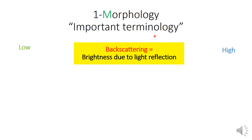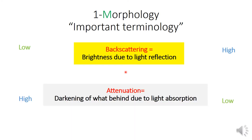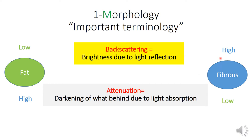We have important terms during description of the morphology of a lesion. The first is backscattering, which means brightness due to light reflection — either low backscattering (less bright) or high backscattering (very bright). The second term is attenuation: the darkening of what is behind, due to light absorption. High attenuation means we can't see what is behind because it absorbs the light; low attenuation means we can see behind clearly. For example, a lipid-rich plaque has low backscattering (less bright) and high attenuation (can't see behind). On the other hand, a fibrous plaque has high backscattering (very bright) and low attenuation (can see behind).